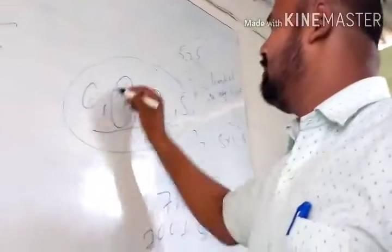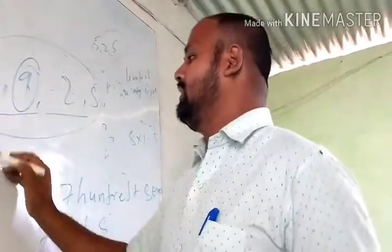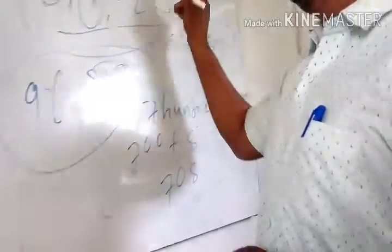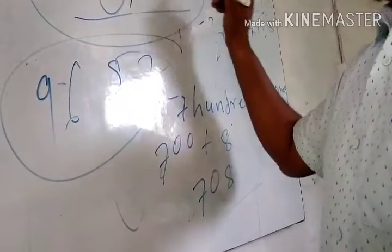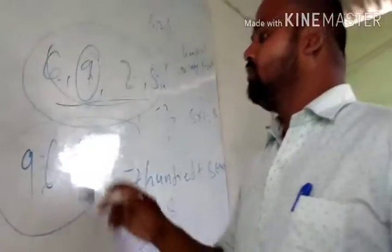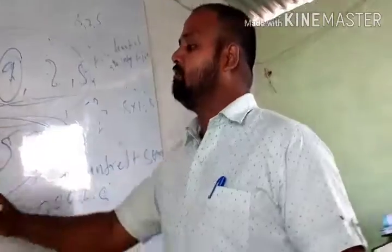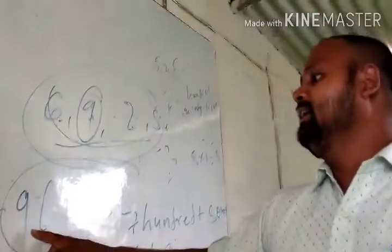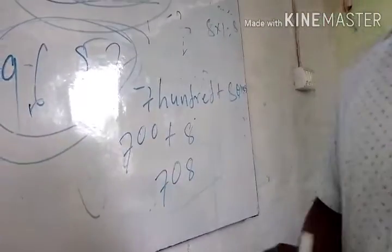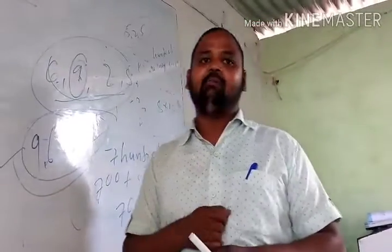बनाने के लिए: जो सबसे बड़ा digit होगा उसे पहले लिखेंगे। 9 से छोटा कौन है? 6 है। 6 से छोटा कौन है? 5 है। 5 से छोटा कौन है? 2 है। तो इन digits 9, 6, 5, 2 से जो सबसे बड़ा number बनेगा वह 9652 होगा। और इसमें comma भी add करेंगे, क्योंकि 3 digits के बाद पहला comma use होता है।